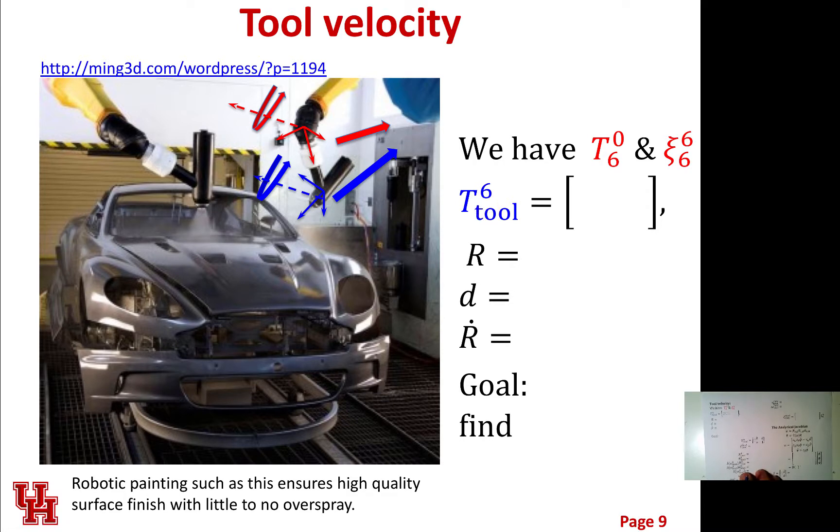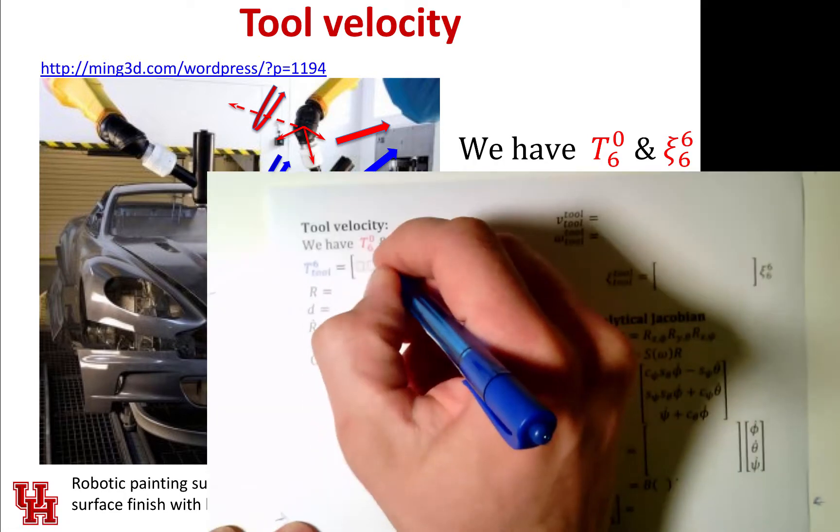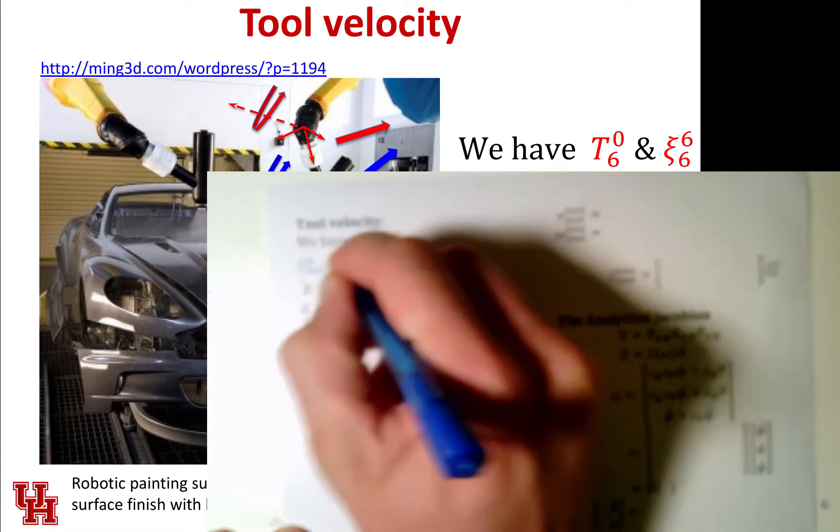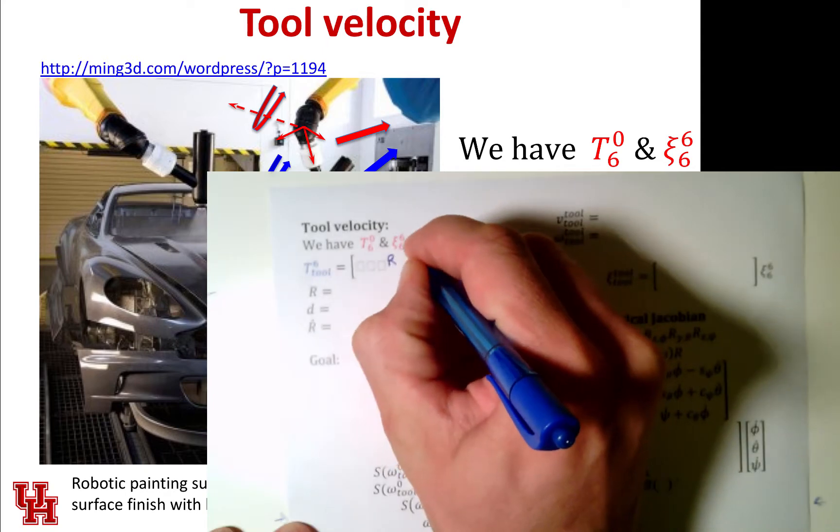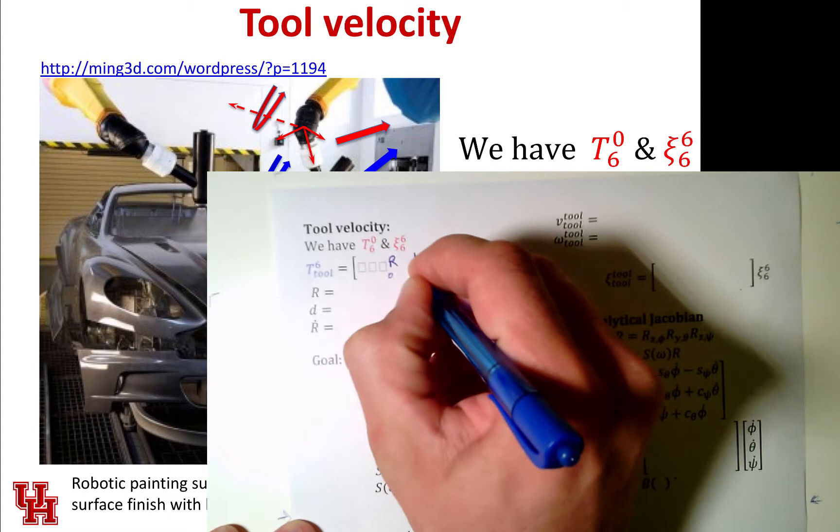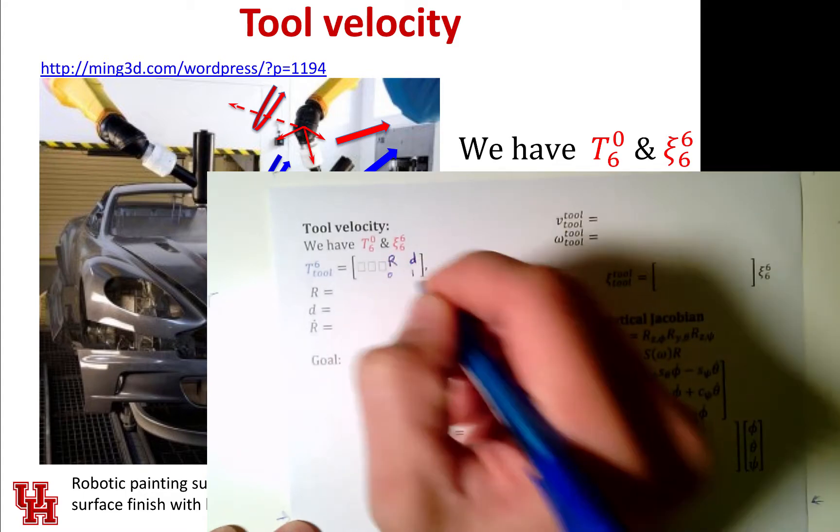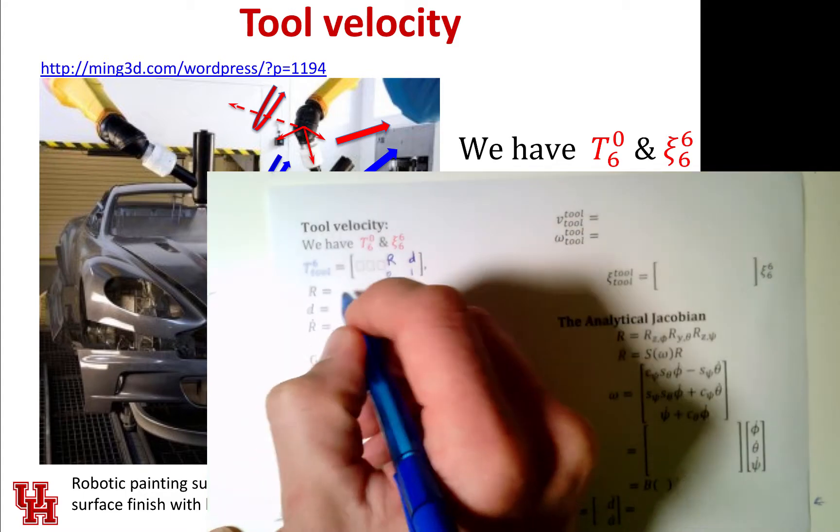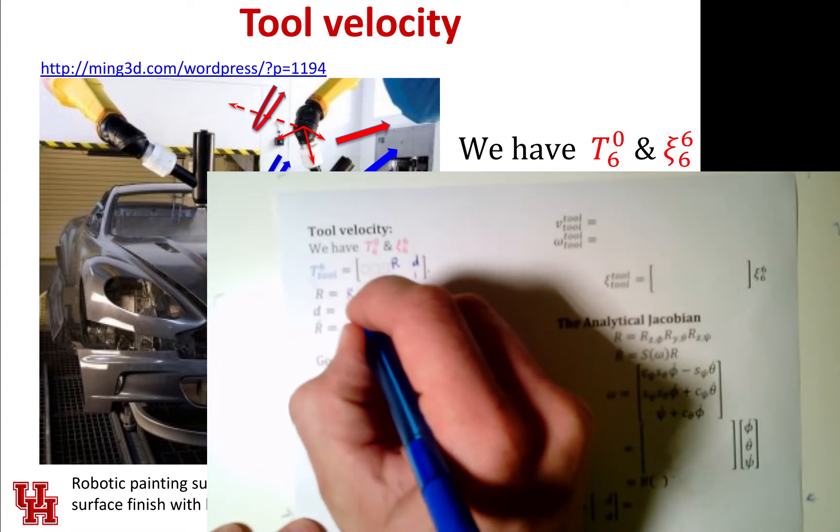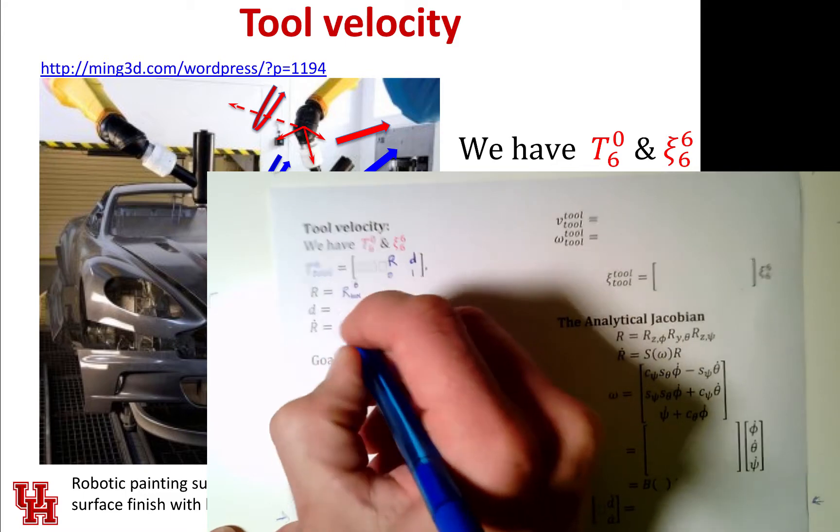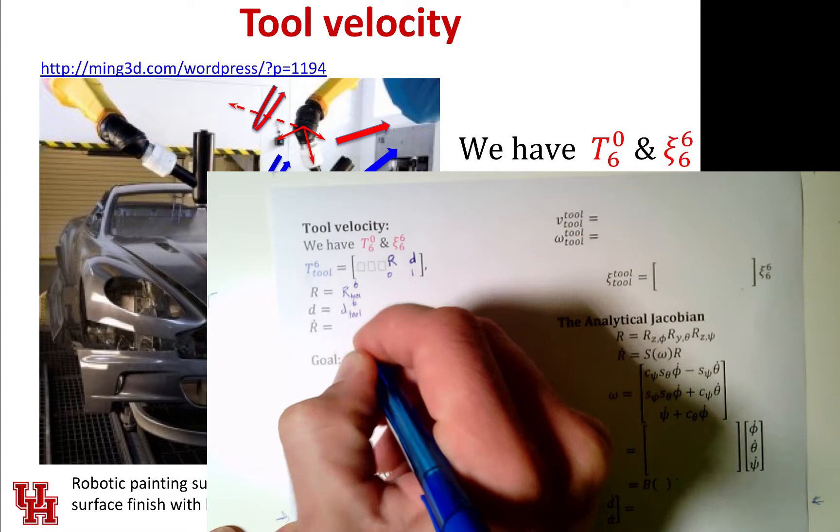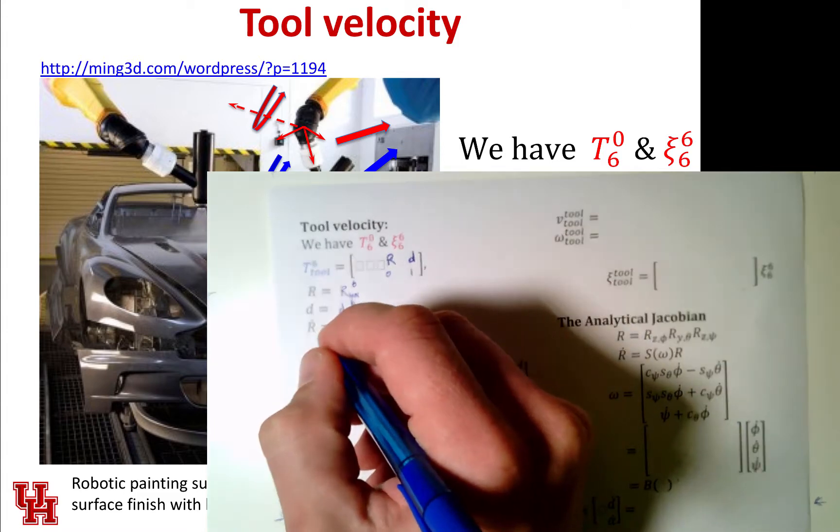When we talk about T of the tool in frame six, we're really saying we want to know this matrix where we've got a rotation matrix, it's new rotation and its d offset, and the bottom row, this is a homogenous transform, so it's zero zero zero one. We want to know what that is, and so this r here is really, we can grab it from this t matrix. We know that this is our tool in frame six and that this is d tool in frame six.